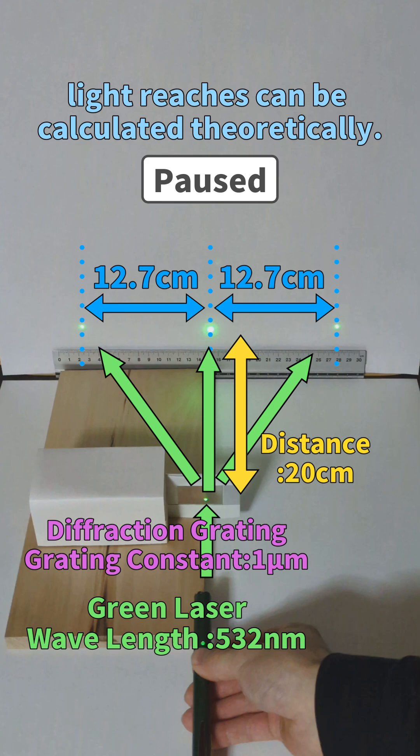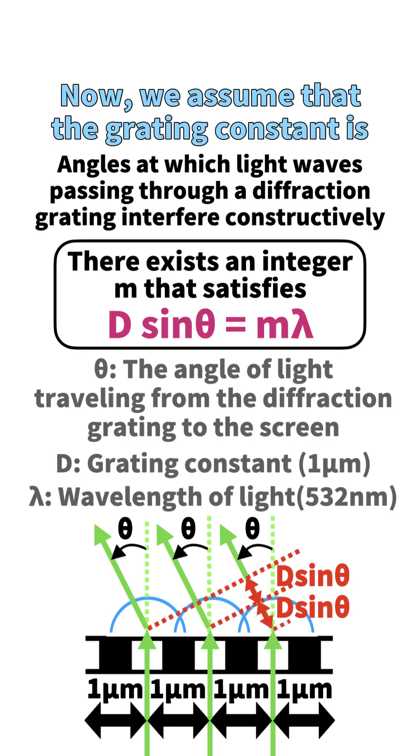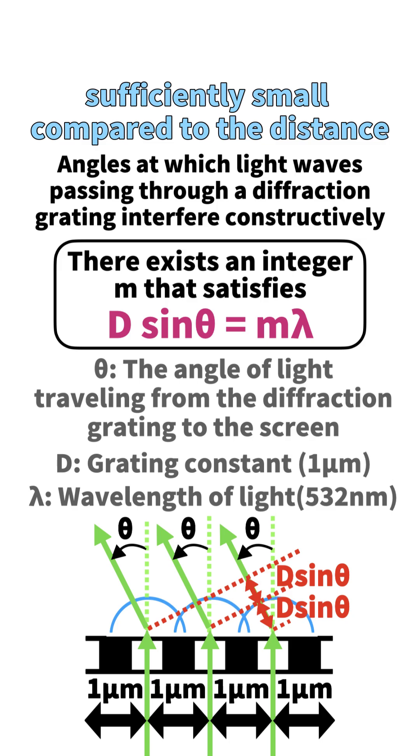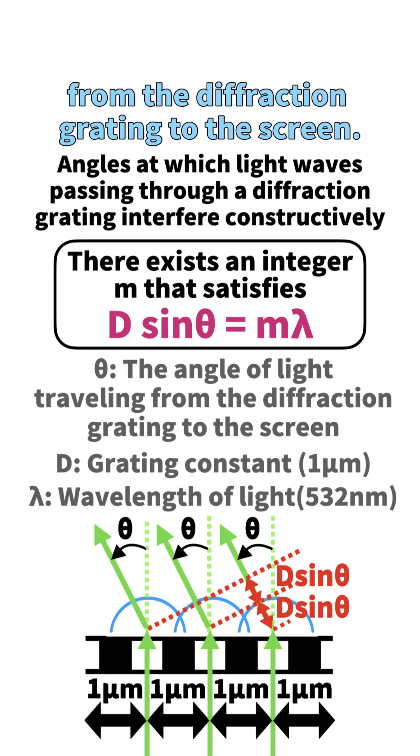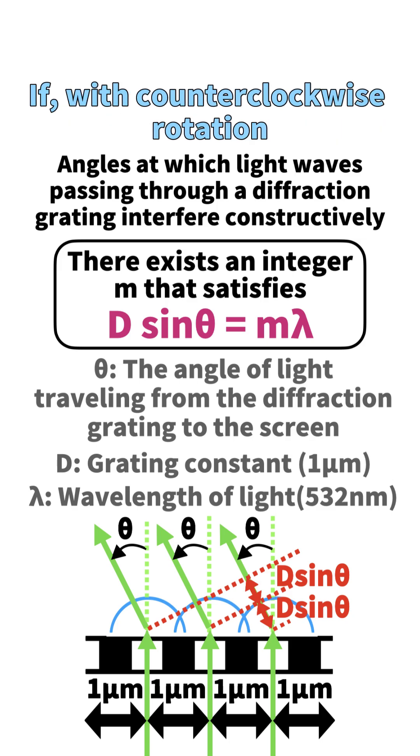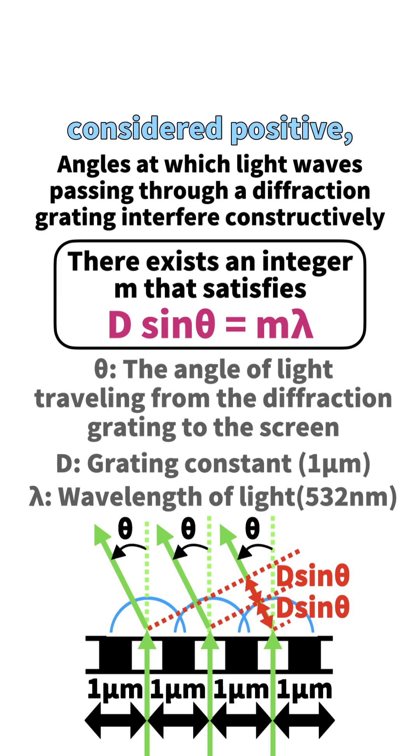In fact, this position where the laser light reaches can be calculated theoretically. We assume that the grating constant is sufficiently small compared to the distance from the diffraction grating to the screen. With counterclockwise rotation considered positive, if the angle θ of the light passing through the diffraction grating toward the screen satisfies the equation...